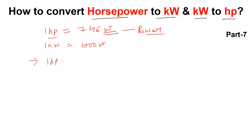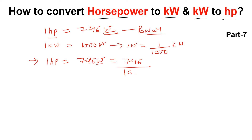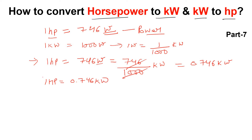So 1 horsepower is equal to 746 watts. Now if I want to convert watts into kilowatts, I simply divide by 1000. So 1 watt equals 1 divided by 1000 kilowatt. Therefore, 746 divided by 1000 gives us the answer: 1 horsepower is equal to 0.746 kilowatt.